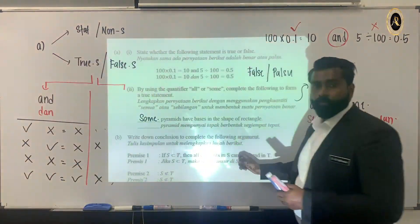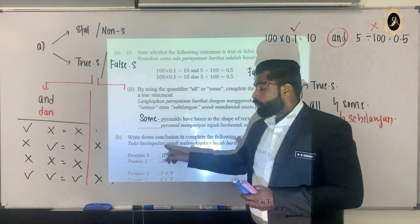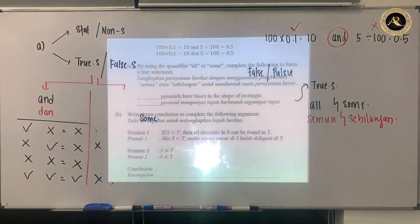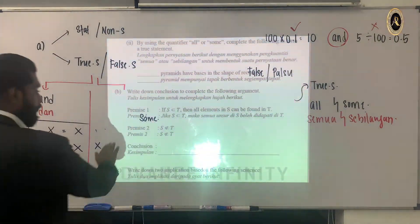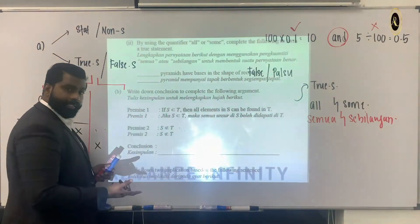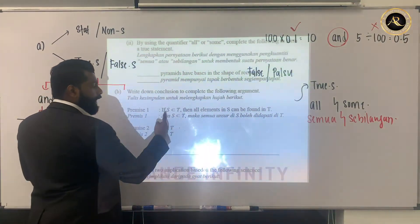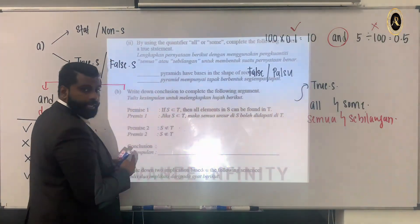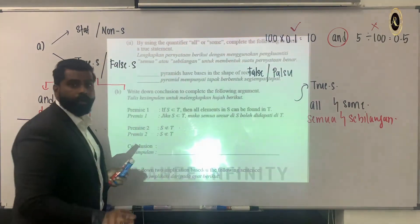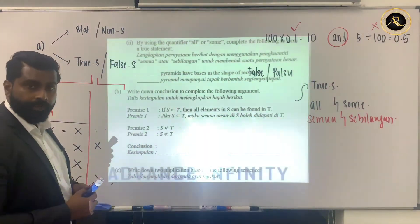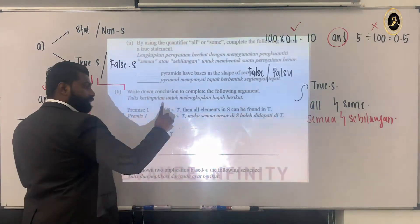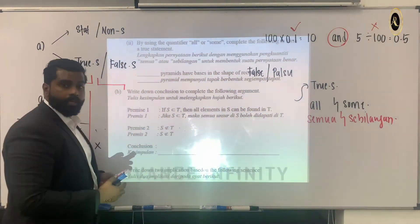Very good. Now we're going to look into the conclusion or kesimpulan. How to write the answer? Very simple. If S is a subset of T, then all the elements in S can be found in T. You must be very clear: if this one happened, this will happen. If this one does not happen, this one cannot happen.